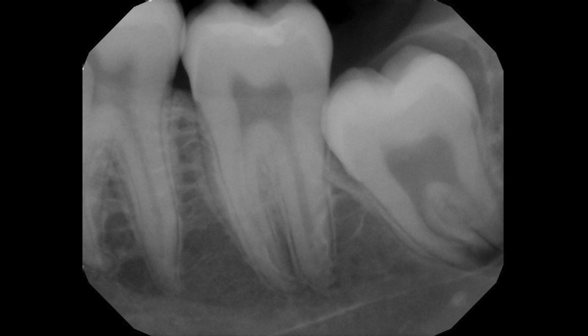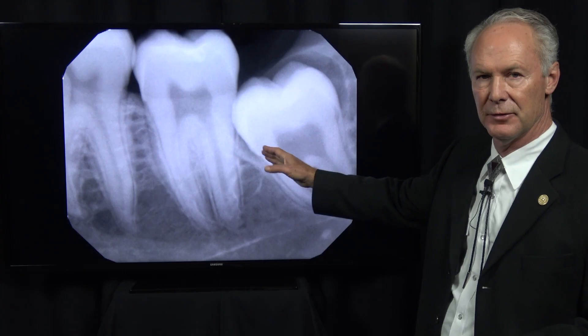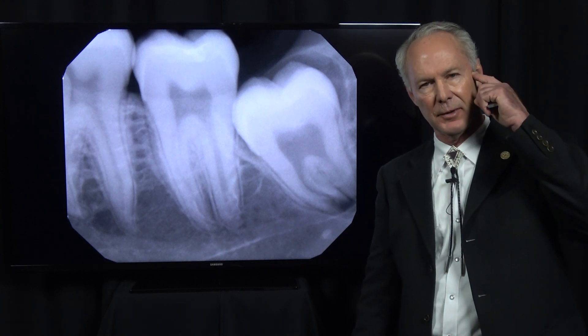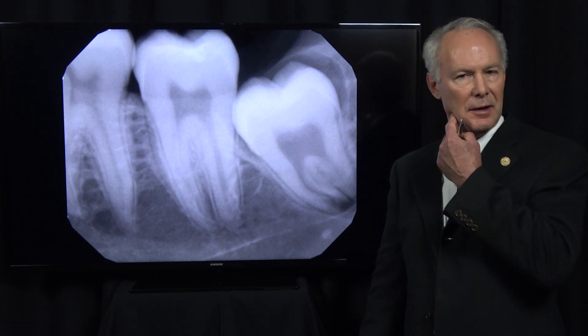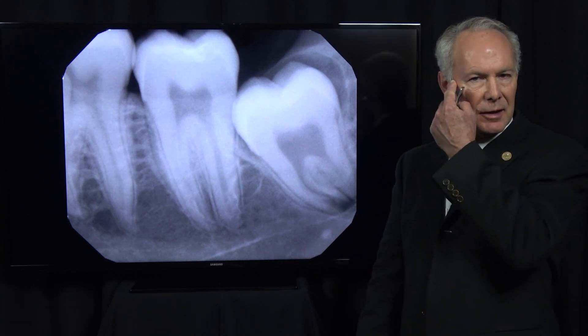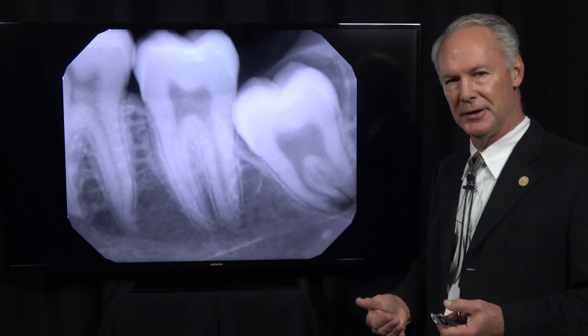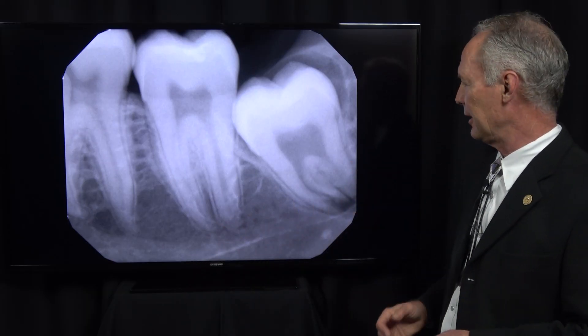We're removing the lower left wisdom tooth first. I always start with the lower left, then the upper left, then the lower right, then the upper right. I do the most difficult ones first — they're most difficult because they're on the other side of the patient. I'm on the right side, so the left side is harder.